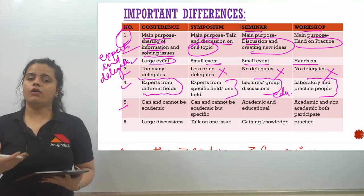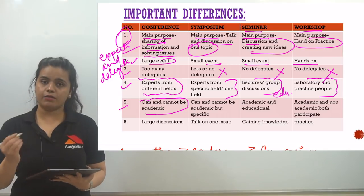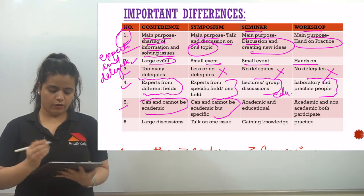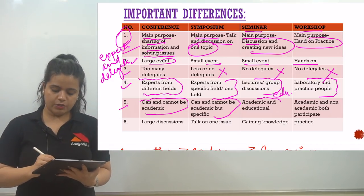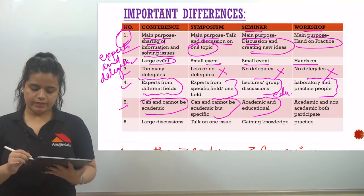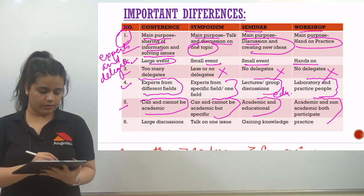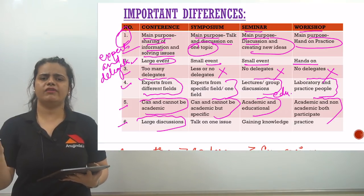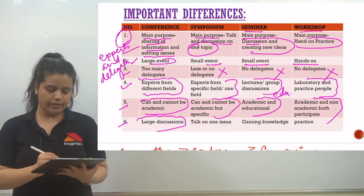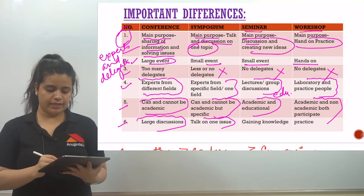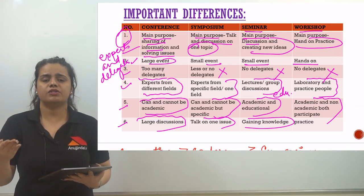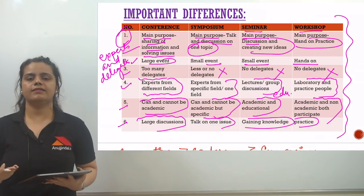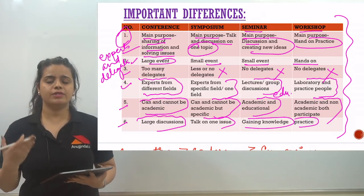The fifth difference is whether academic or not: conferences can be academic or non-academic; symposium can also be academic or non-academic but will be specific to a field; seminar is academic and educational; workshop can be academic or non-academic. The sixth difference is the type of discussion: conferences have large discussions across many issues over many days; symposium talks about one issue; seminars are for gaining educational knowledge; and workshop is about practice. These are the six major differences you have to remember for the UGC NTA Net exam.